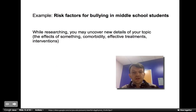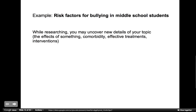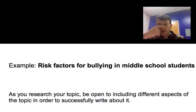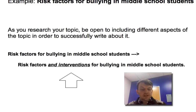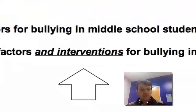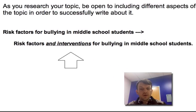While researching, you may uncover new details on your topic, such as the effects of something, comorbidity, effective treatments, or interventions. As you research your topic, be open to including different aspects of the topic in order to successfully write about it. In our example, using risk factors for bullying in middle school students, after you do some research, you might see that there's a lot written about interventions as well. So your topic could be expanded to risk factors and interventions for bullying in middle school students.